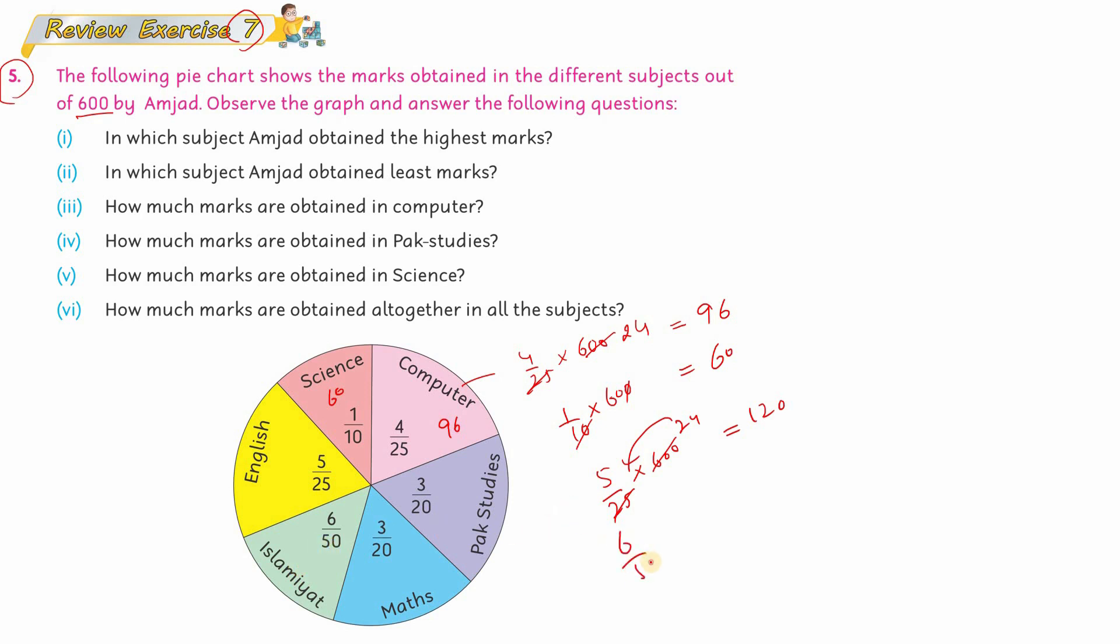For Islamiat it is 6 by 50, so 6 by 50 multiplied by 600. In the same way, divide 600 by 50 which gives 12. Now 12 multiplied by 6 gives 72. So Islamiat has 72 marks.